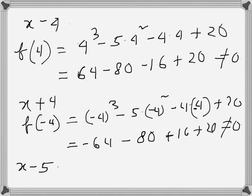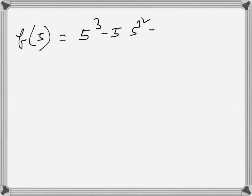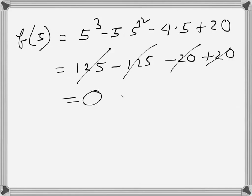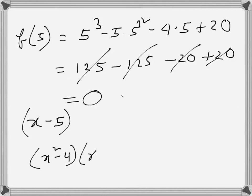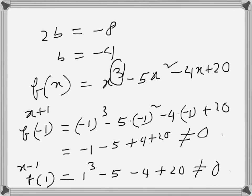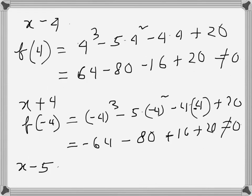We try x-5: f(5) = 5³ - 5(5²) - 4(5) + 20 = 125 - 125 - 20 + 20 = 0. So f(5) = 0, which means x-5 is a factor. Since the polynomial is of third order and x²-4 already accounts for two factors, the only remaining factor is x-5.